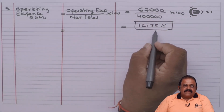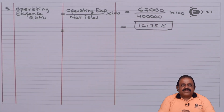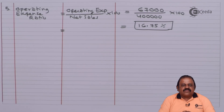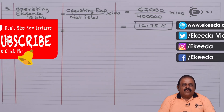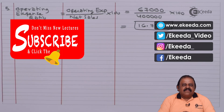Operating expense ratio equals operating expenses divided by net sales multiplied by 100: 67,000 divided by 4 lakhs equals 16.75%. In this question many ratios have been calculated. More composite ratios can also be calculated depending on the marks allotted. Thanks for watching — stay tuned with Ikida and subscribe to our channel.